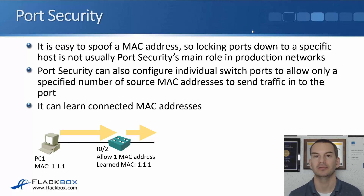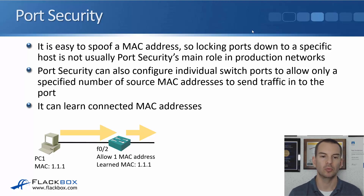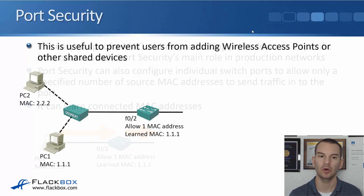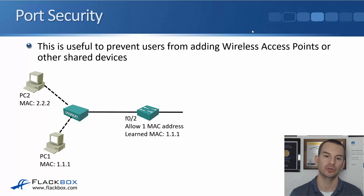Port security can also configure individual switch ports to allow only a specified number of source MAC addresses to send traffic into the port, and it can learn the MAC addresses that are coming in. What we configure here is on FastEthernet 0/2 we say we're going to allow only one MAC address to send traffic into this port. We don't specify what the MAC address is, but because PC1 is connected, the switch will learn that the current MAC address is 1.1.1. This prevents users from adding wireless access points or other shared devices onto your network.